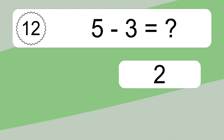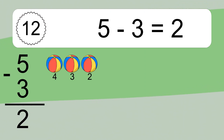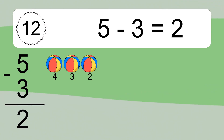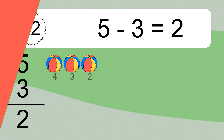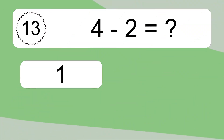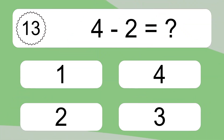5 minus 3 equals what? 5 minus 3 equals 2. Let's count it: 4, 3, 2.